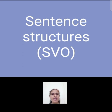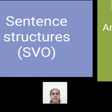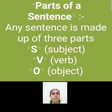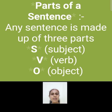Sabse pehle hum sentence structures discuss karengi. Parts of a sentence — any sentence is made up of three parts. Koi bhi sentence mainly three parts se milkar banta hai: S, V, O. S stands for subject, V for verb, and O for object.